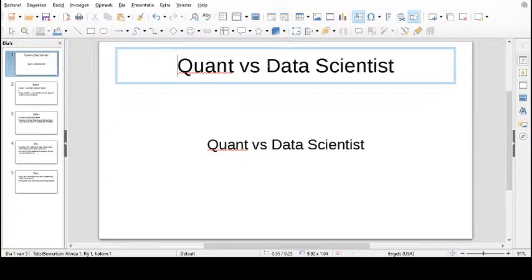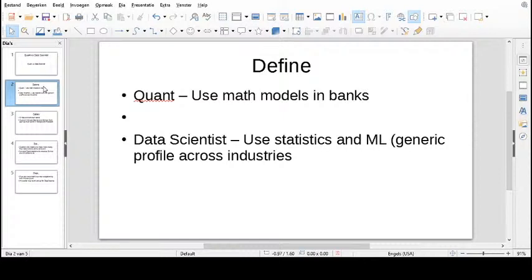Let's first define what a quant is and what a data scientist is. A quant is a person who uses math and statistics to build financial models and pricing models in banks. A data scientist is a very generic role.